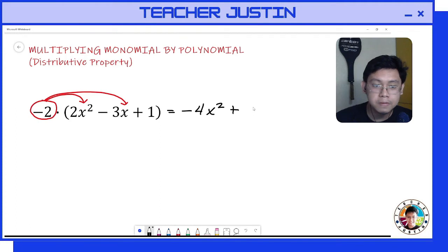And last one, we multiply negative 2 by positive 1. So negative 2 times positive 1, that will be negative 2. And their product will be negative 4x squared plus 6x minus 2.